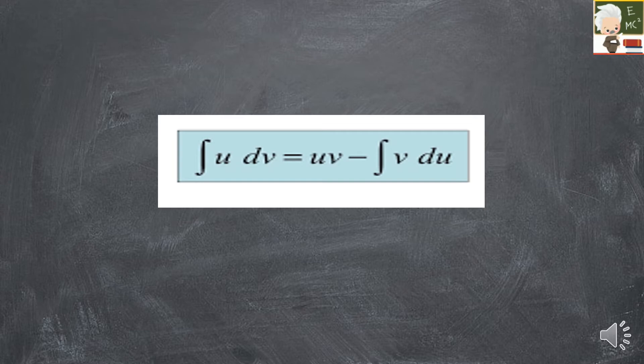Integration is all about the formula: integral UdV is equal to UV minus integral V·dU. It is standard, but sometimes you want to solve problems faster. The trick makes it easier to apply without mistakes.